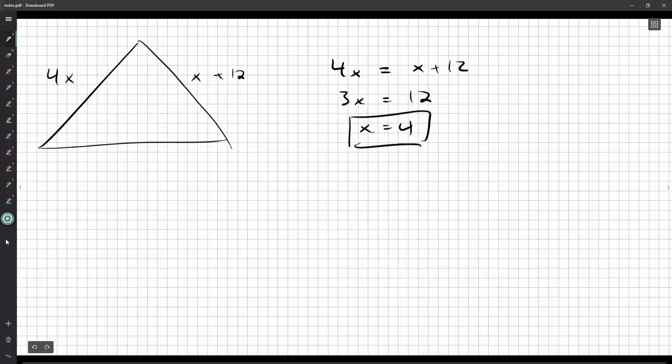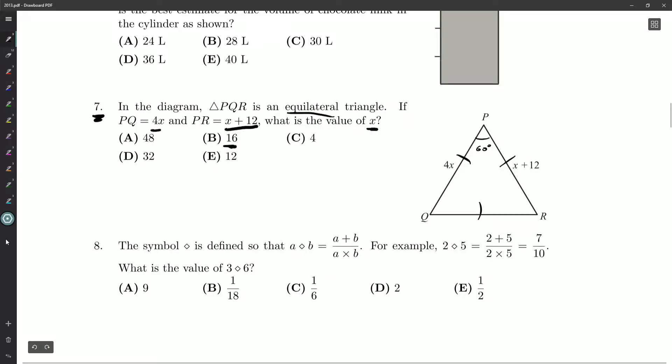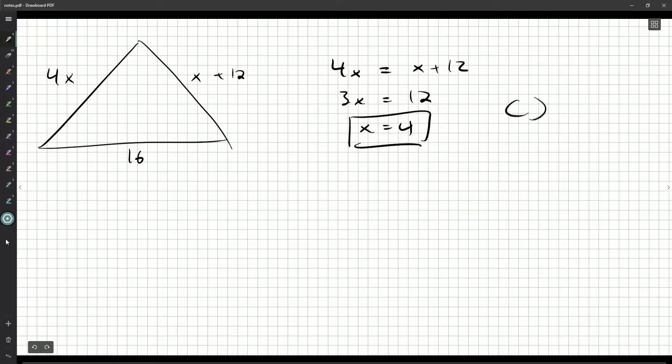The side lengths here, 4x or x plus 12, are going to be 16. And you'll notice 16 is one of the possible answers, but we're not interested in that. We want the value of x, so we're going to bubble in C for our answer.